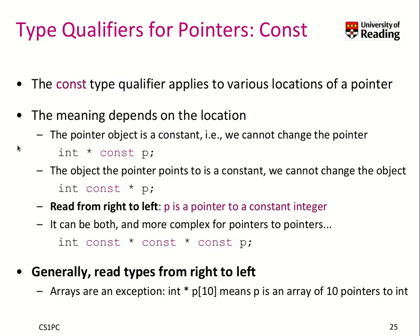We will now learn a new type qualifier for pointers, which is called CONST. This type qualifier allows us to change any type of a pointer to be immutable, meaning you cannot modify this variable further. It can also be used with normal variables like an integer variable, but it's a bit tricky when you use it with pointers because the meaning depends on the location.